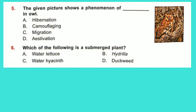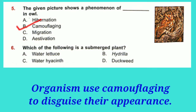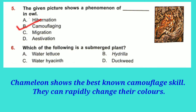Question No. 5: The given picture shows a phenomenon of dust in an owl. Option B is correct: Camouflaging. Organisms use camouflage to disguise their appearance, usually to blend in with their surroundings. The chameleon shows the best-known camouflage skills of any animal — they can rapidly change color. In the given question, the owl shows camouflage to its surroundings.